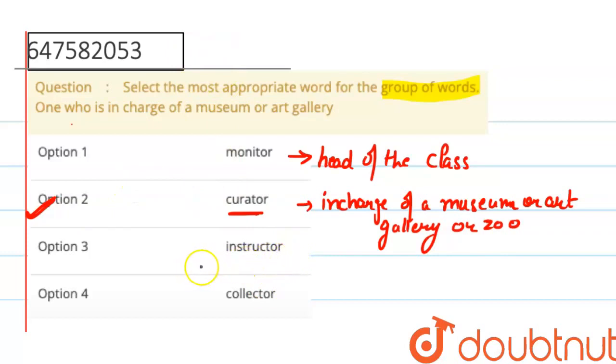Instructor is the person who gives instructions, like in charge of the gym. Collector is someone who collects something, like a ticket collector in the buses or in the trains. So the answer is option 2, curator - one who is in charge of the museum.